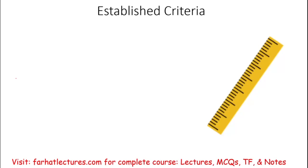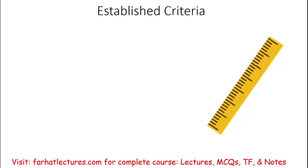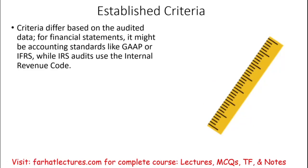One of the things we mentioned is established criteria — what does that mean? It means we have to measure our evidence against something. We collected evidence, but what are we measuring it against? Do we collect evidence randomly? This is what we mean by established criteria. The criteria will differ from audit to audit, depending on what you are auditing.